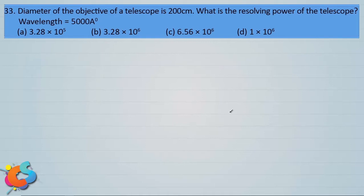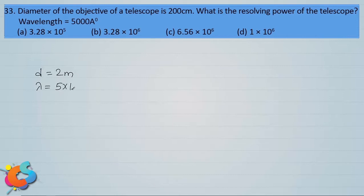This is a simple problem based on the formula for the resolving power of a telescope. The diameter of the objective is directly given to be 200 centimeter or simply 2 meter. The wavelength of the incident light is 500 nanometer or 5000 angstrom, which is 5 into 10 power minus 7 meter. We are supposed to find out the resolving power of the telescope.